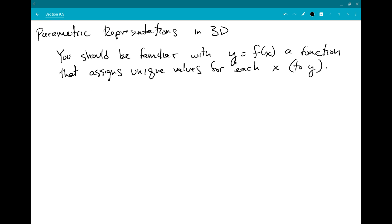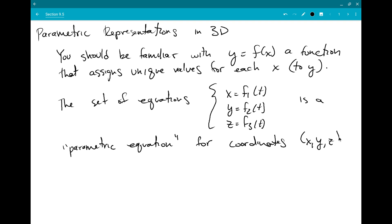Now what we want to do is think about functions that tell us more than just y, tell us x, y, and z all in 3D. So a set of equations is going to be given by x equal to f1 of t, y equal to f2 of t, and z equal to f3 of t. This is a parametric equation for coordinates x, y, and z that you could plot in 3D. And the reason it's called parametric is because it depends on parameter t.